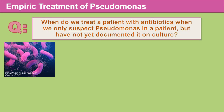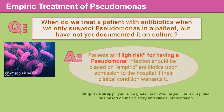Let's talk about the empiric treatment of Pseudomonas. When do we treat a patient when we only suspect Pseudomonas but have not yet documented it on culture? Patients at high risk for a pseudomonal infection should be placed on empiric antibiotics upon admission to the hospital if their clinical condition warrants it. The key words are 'high risk,' which we'll define next.